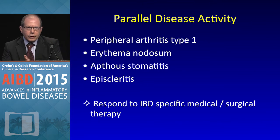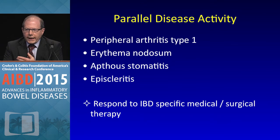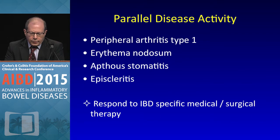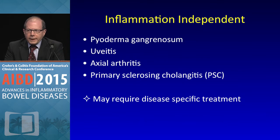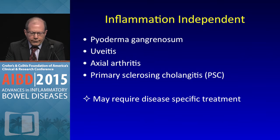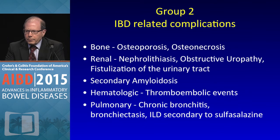Parallel disease activity is easier for us to manage — Type 1 arthritis, erythema nodosum, aphthous stomatitis, and even episcleritis. There you're really managing their IBD inflammation. Independent manifestations are the critical part: pyoderma gangrenosum, uveitis, axial arthritis, and PSC. These patients really do require very specific treatment and you have to work with your specialist. Group 2 patients are related to IBD complications.